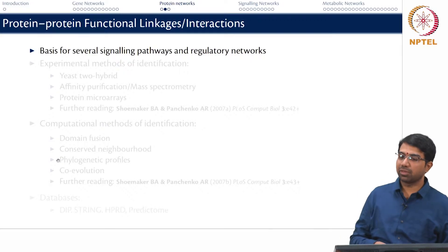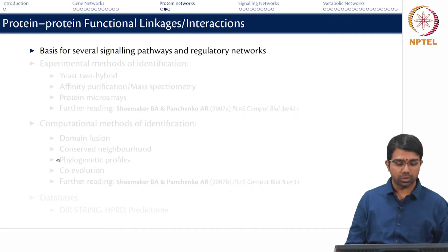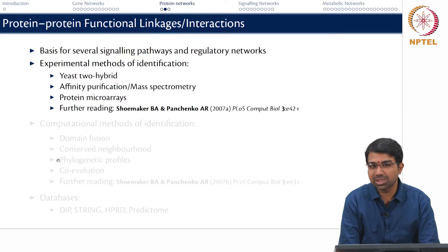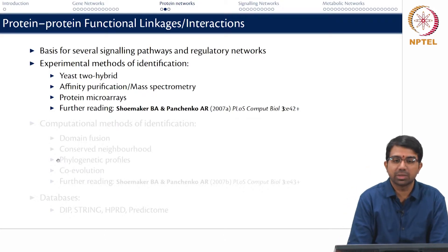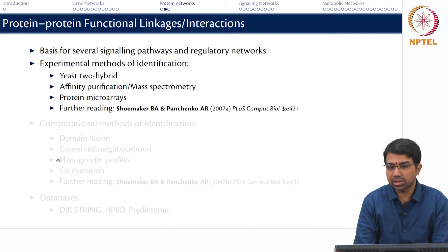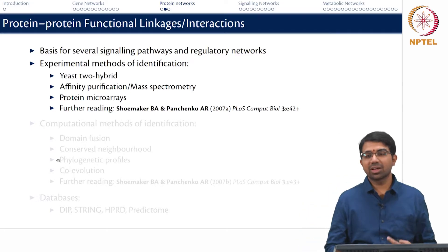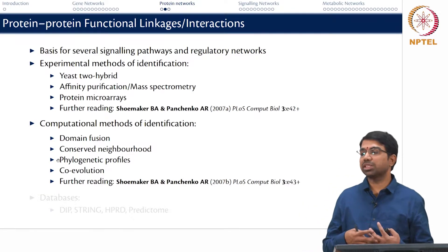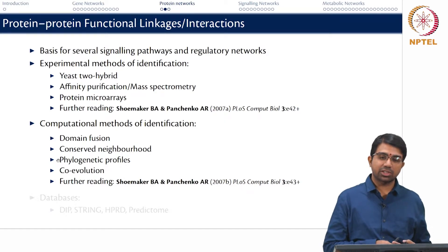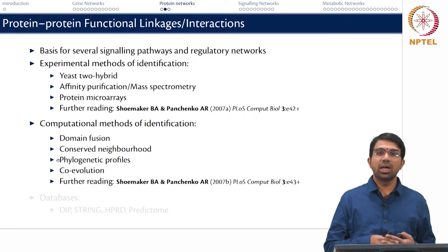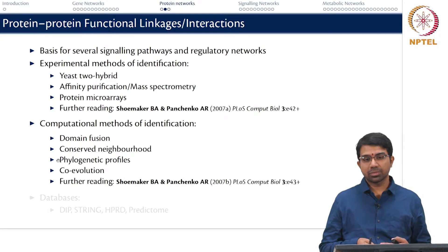There are many experimental methods to identify these protein interactions and a lot of new techniques have been developed — very high throughput — such as yeast two-hybrid, affinity purification, mass spec, and protein microarrays. But in this course, we are more interested in computational methods, and there happen to be many computational methods typically based on just the gene sequences because they are abundant. Can you infer protein interactions or protein functional associations based on the gene sequences for an organism?